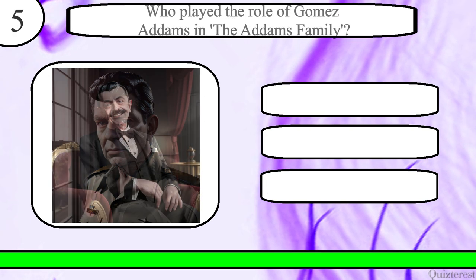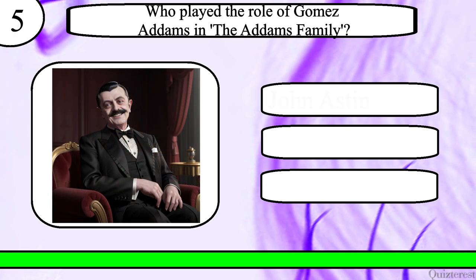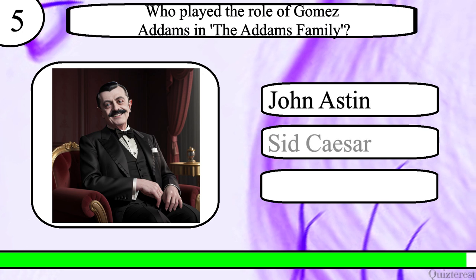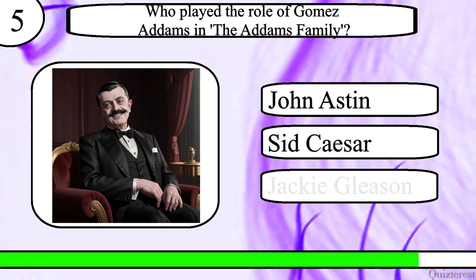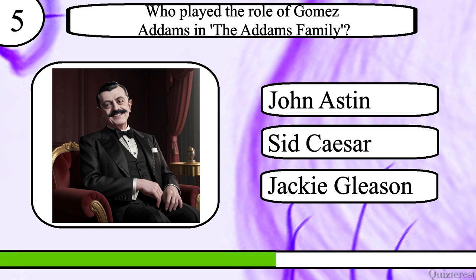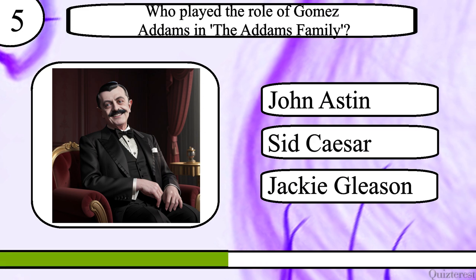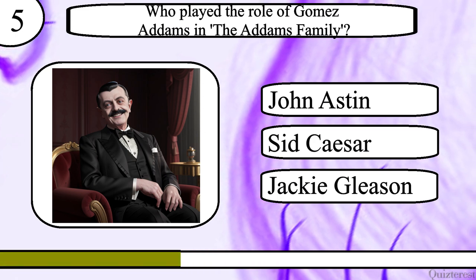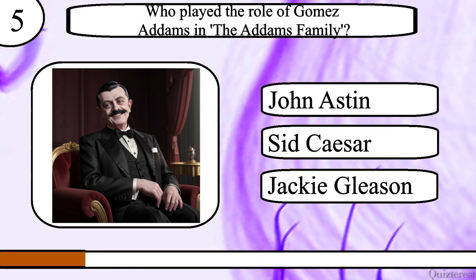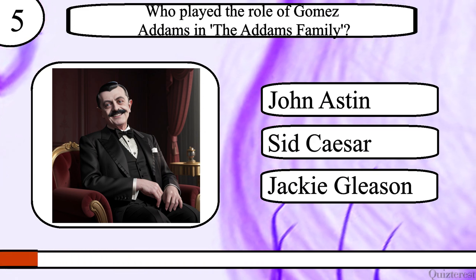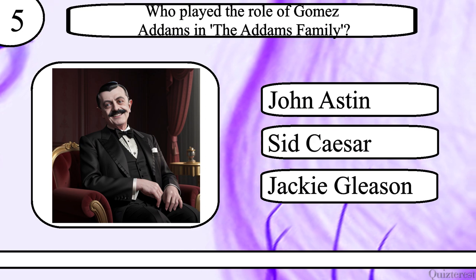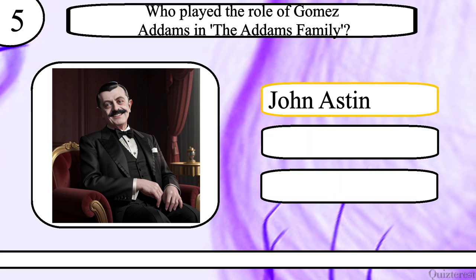Question 5. Who played the role of Gomez Addams in The Addams Family? John Astin, Sid Caesar or Jackie Gleason? The correct answer is John Astin.